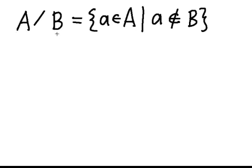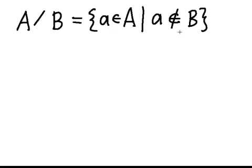Notice that the concept is highly non-symmetric. So A minus B is not going to be the same as B minus A, because we're including specifically elements of A and not including elements of B in the difference. Just like the notion of difference of two numbers, which is also highly non-symmetric.